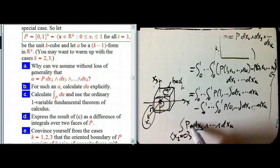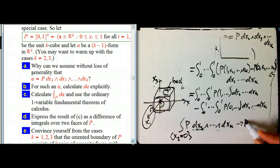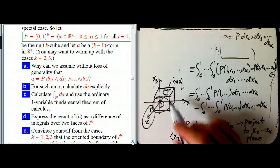Remember, one way to think about integrating a form dx_2 through dx_k, is I project to the x_2 through x_k plane, or subspace to be more precise in k dimensions. But if I'm doing that, if x_2 is equal to zero, and I project to that plane, it's going to collapse.